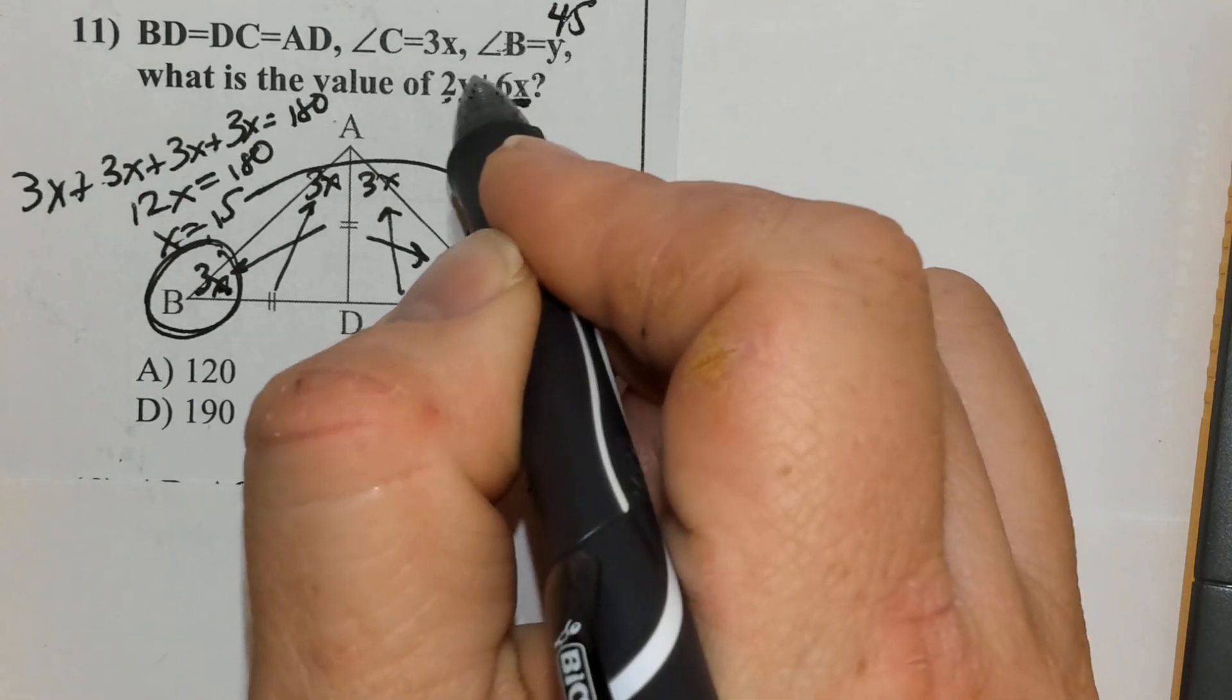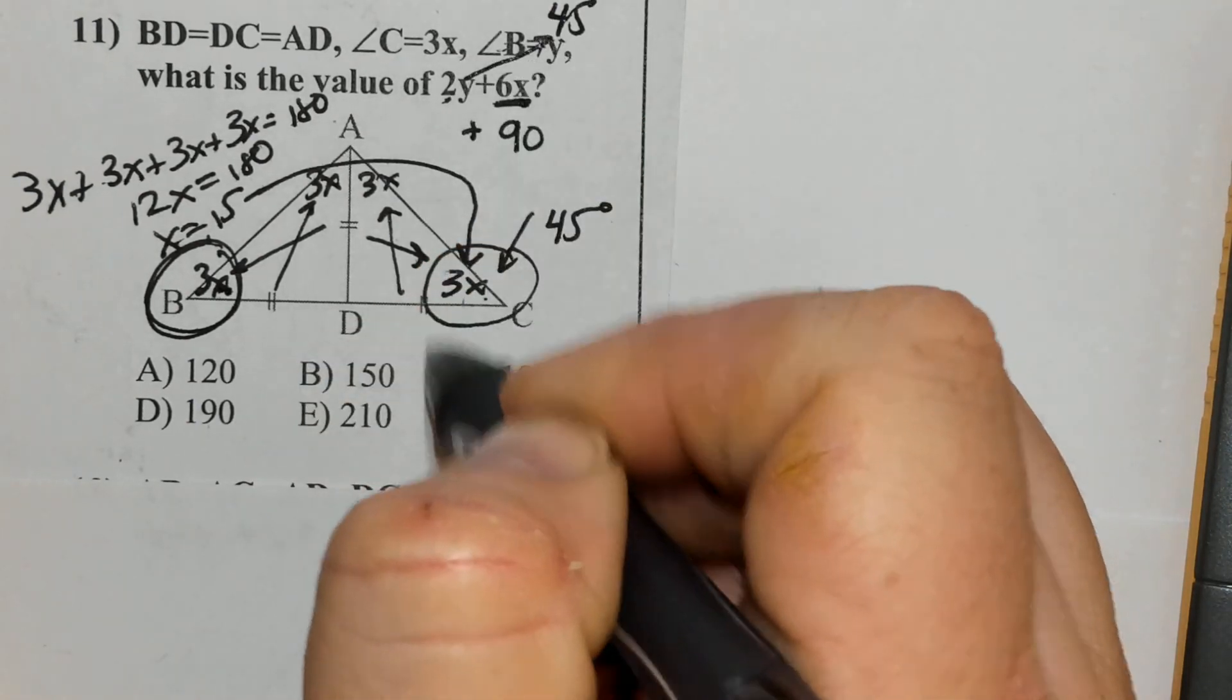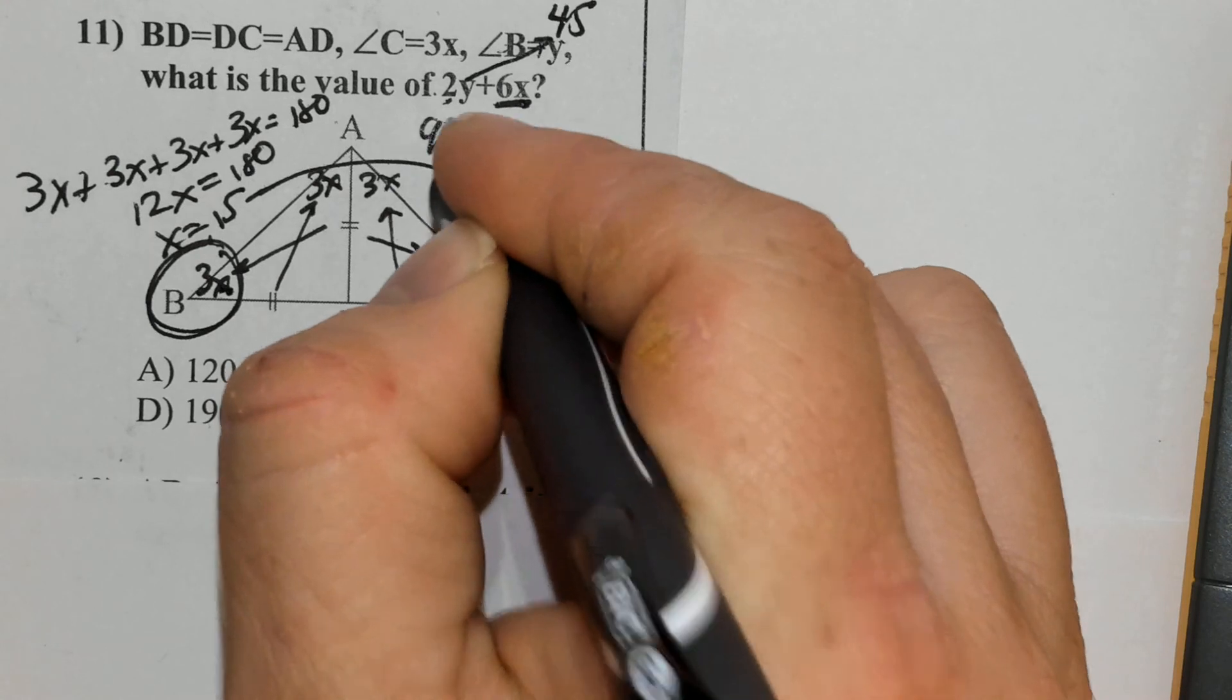And if angle B is 45, what is 2 times 45? 2 times 45 is 90. And 90 and 90 equals 180.